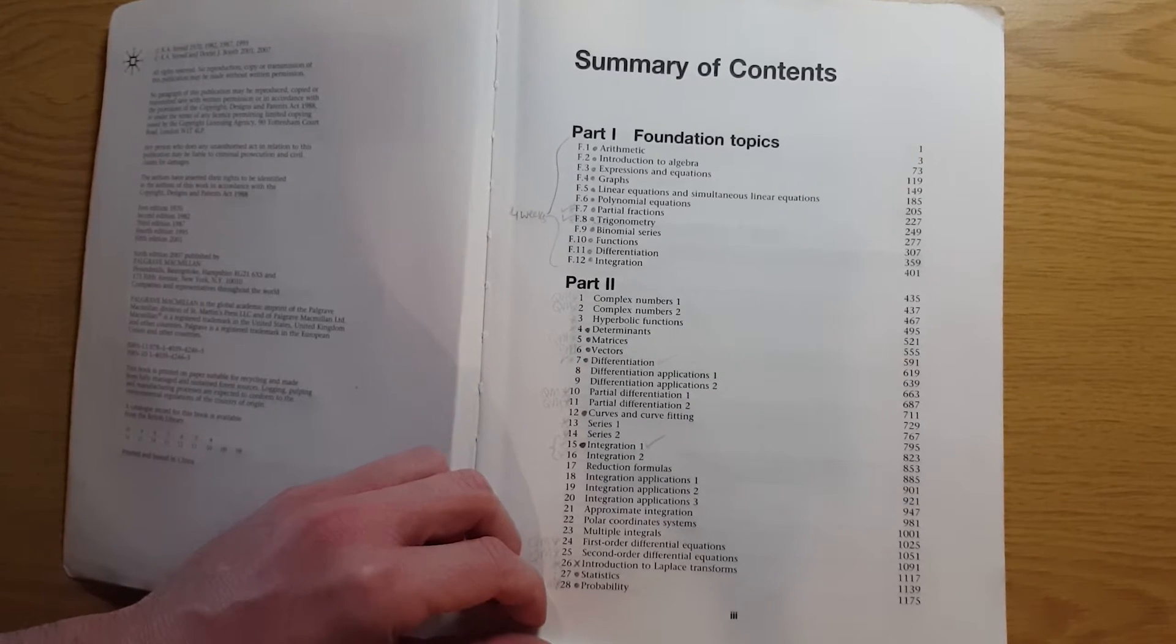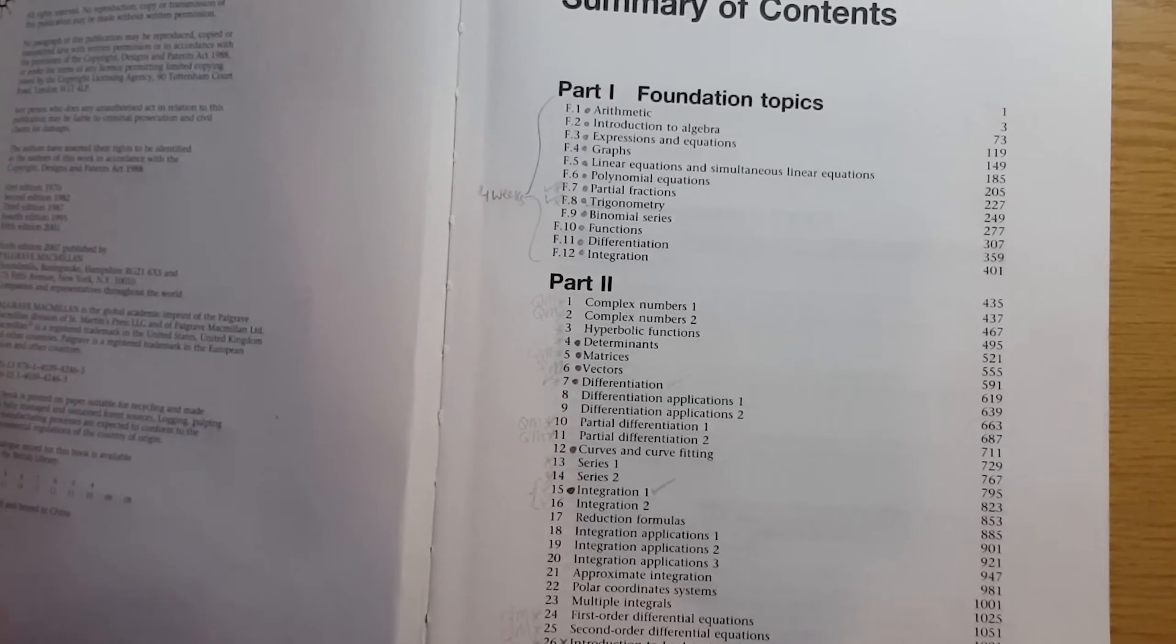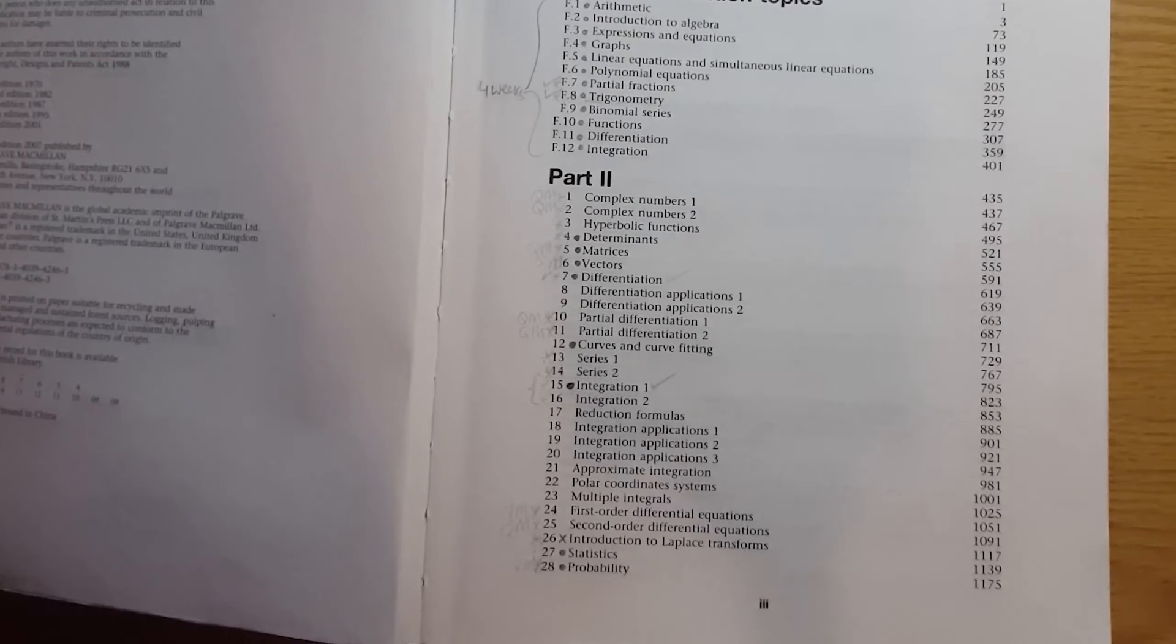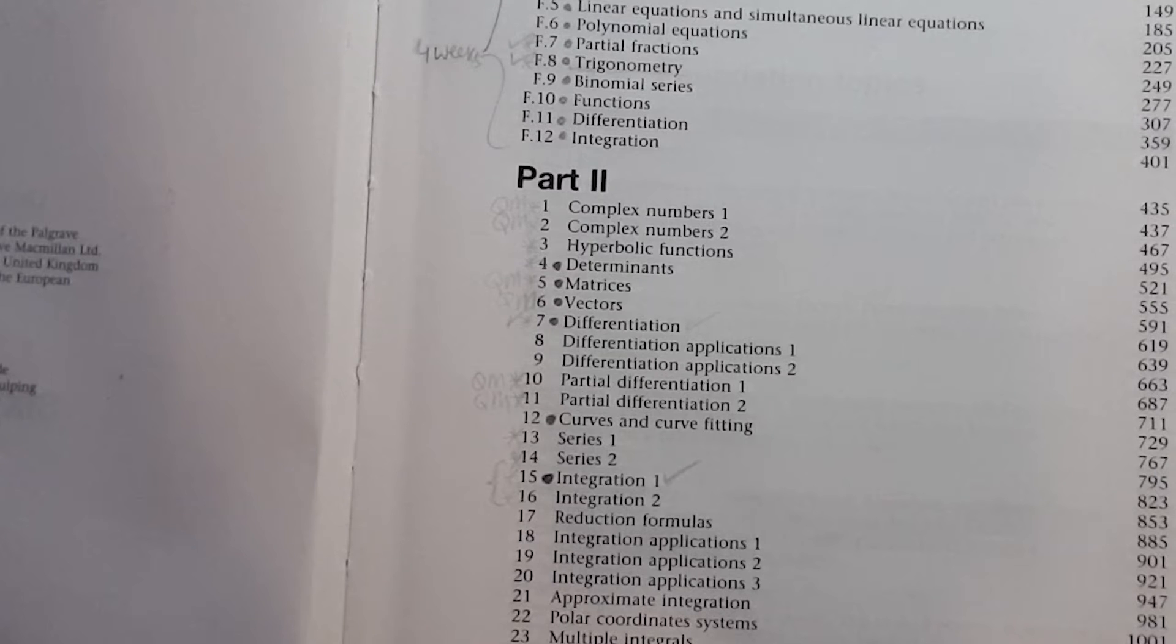Part two of this book covers pretty much all you need in the first year of a physics course and covers things like complex numbers, vectors, matrices, and a deeper dive into calculus and multivariable calculus and so on. And you probably can see that I've marked a lot of the chapters with QM, which means that they were very useful when studying my quantum mechanics module.